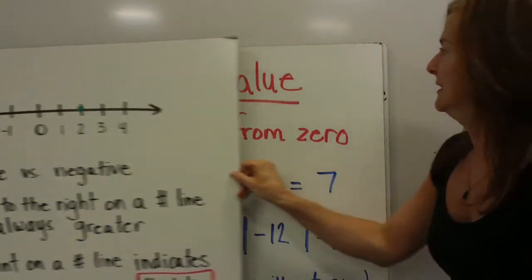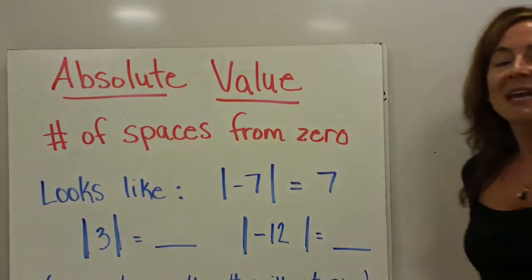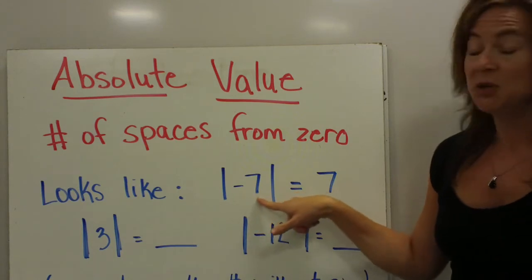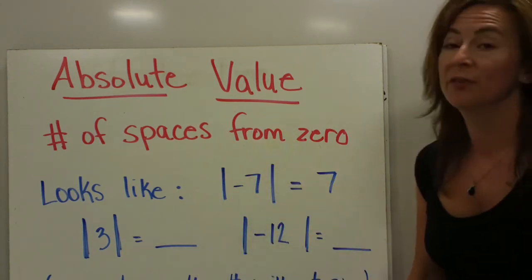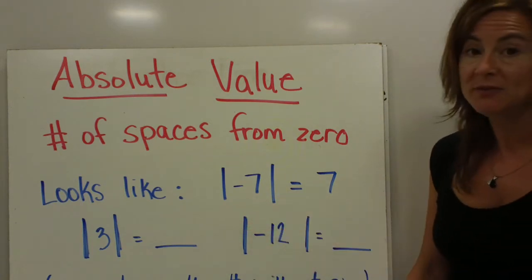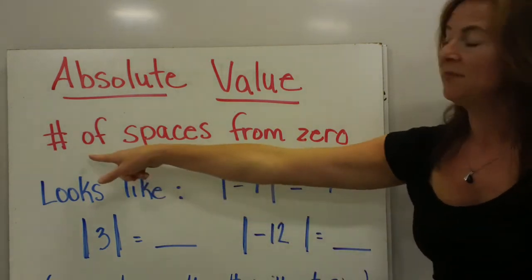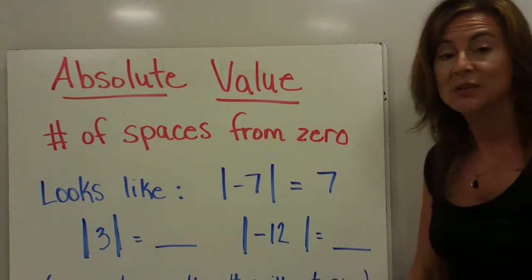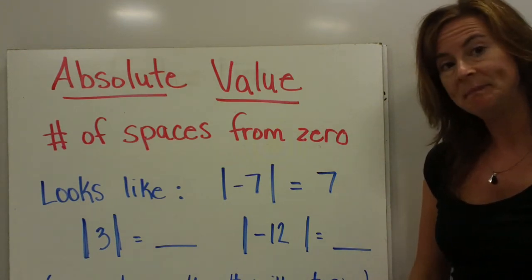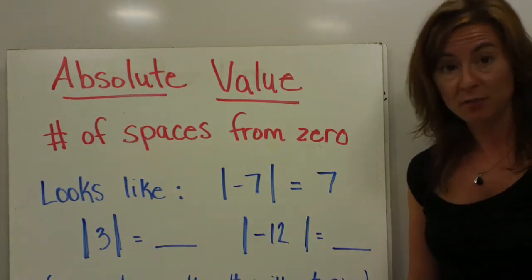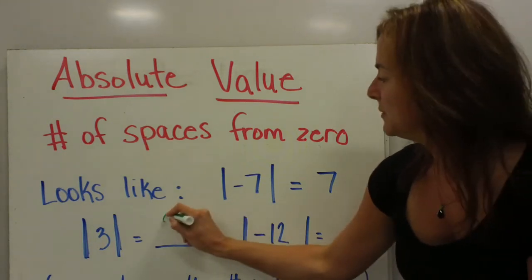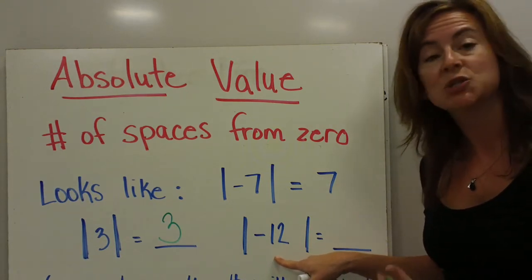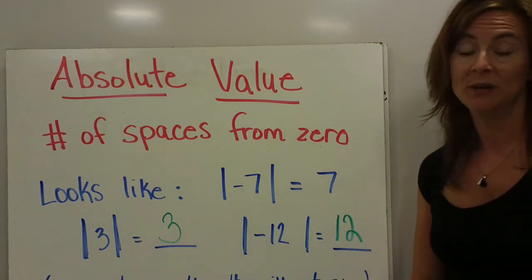The number of spaces from 0 is a number's absolute value. The definition of absolute value is the number of spaces from 0. What that looks like is your number with two vertical lines on either side of it. That indicates the absolute value of negative 7. Since the absolute value is the number of spaces from 0, negative 7 is 7 spaces from 0, so the absolute value of negative 7 is 7. The absolute value of 3 is 3, and the absolute value of negative 12 is 12.